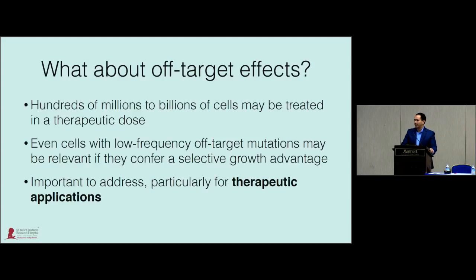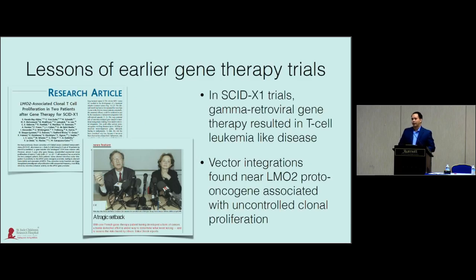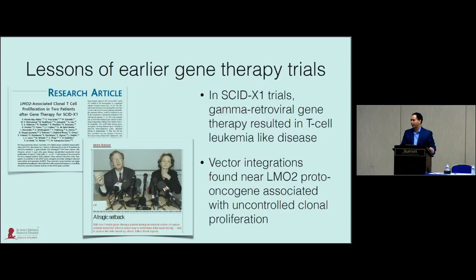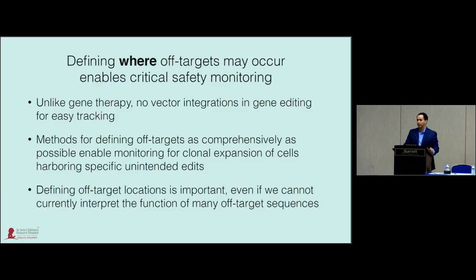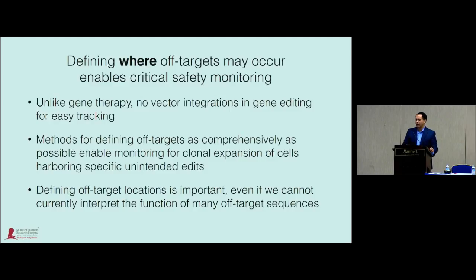One aspect of gene editing for therapeutics is that for most strategies, you're exposing hundreds of millions to billions of cells in a single therapeutic dose. It's important to realize that even cells with low-frequency off-target mutations might be relevant if they confer a selective growth advantage. We should learn the lessons of earlier gene therapy trials — in SCIDX1 trials, gamma retroviral gene vectors resulted in T-cell leukemia-like disease in several young patients. Vector integrations near the LMO2 proto-oncogene were associated with uncontrolled T-cell clonal proliferation.